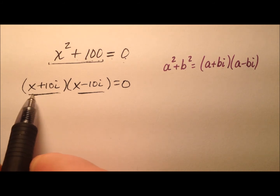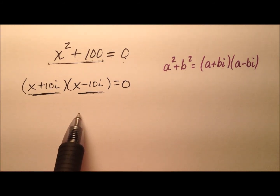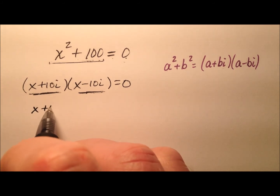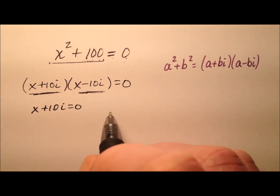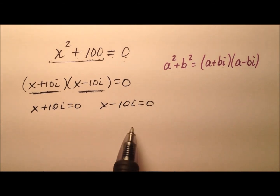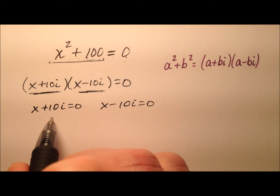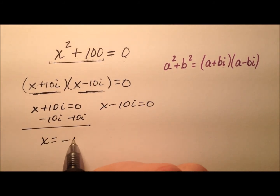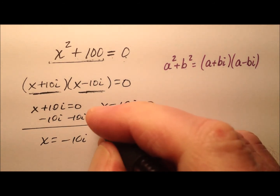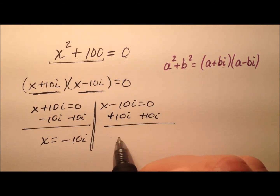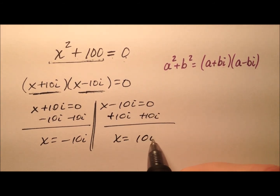When I'm multiplying these together and I get zero, that means at least one of these has to be zero. So we're going to set the first one equal to zero and set the second one equal to zero and solve both independently. On this first one, let's subtract 10i from both sides, so x equals negative 10i. On the second one, we can add 10i to both sides, and we'll get x equals positive 10i.